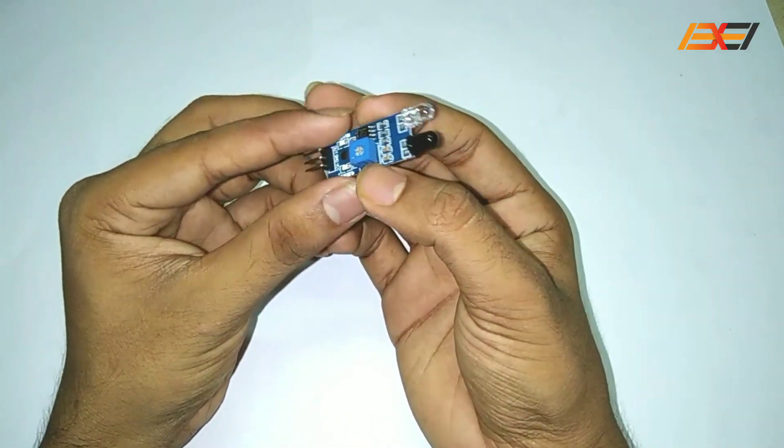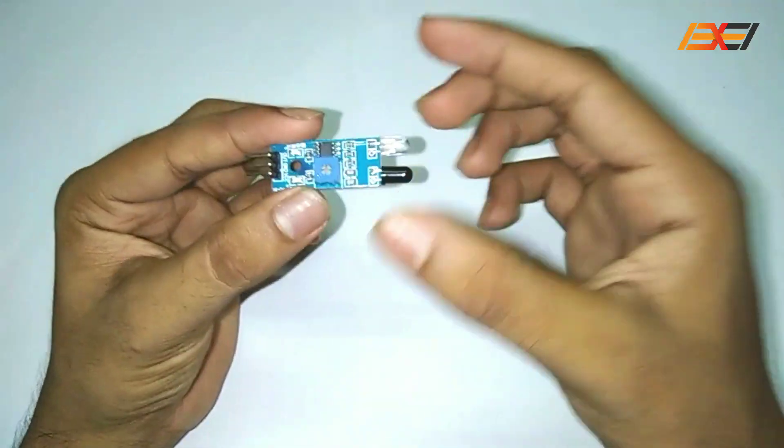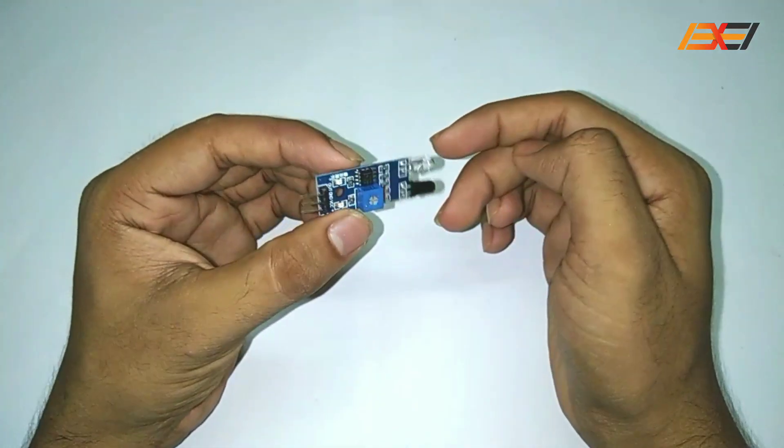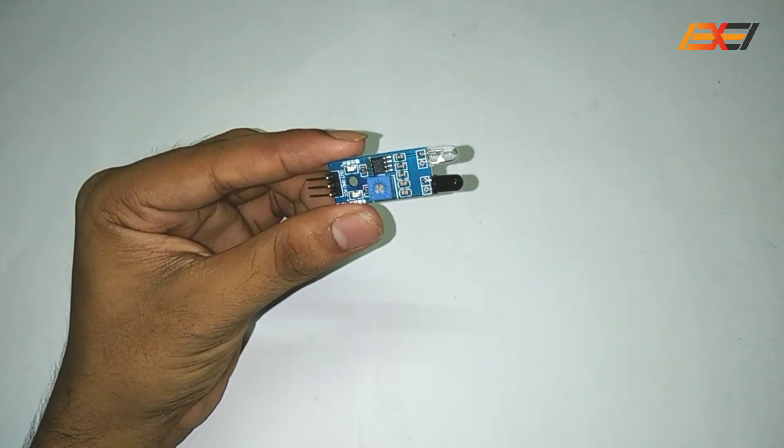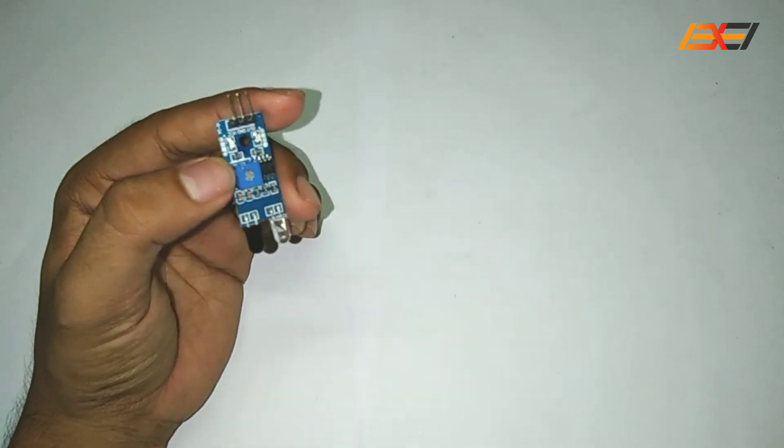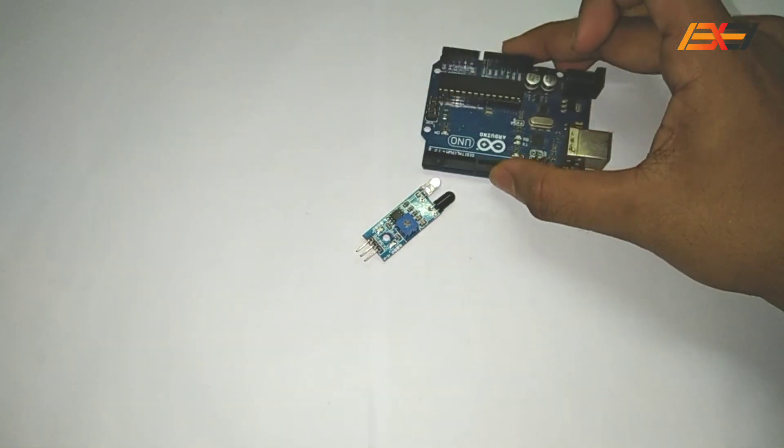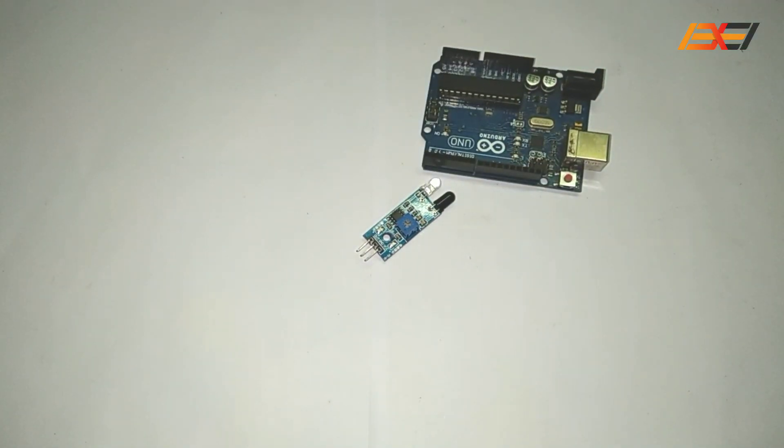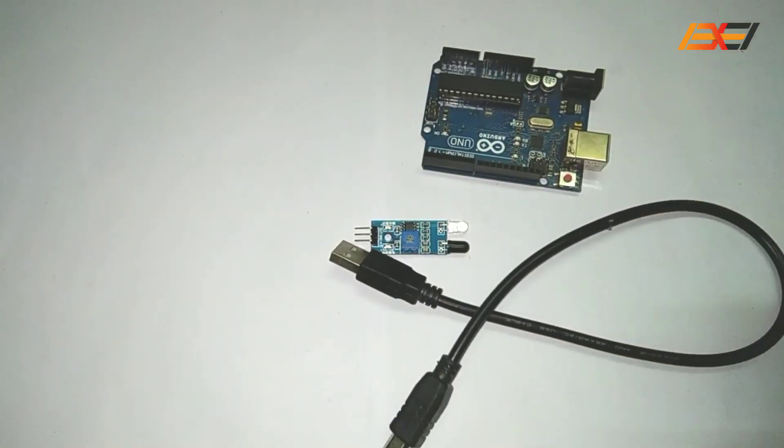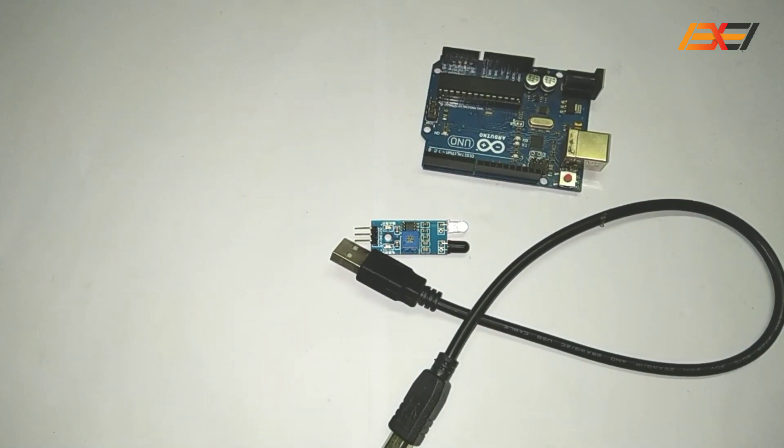Now I will show you how to interface this IR sensor with Arduino UNO board. For this we need Arduino UNO board, USB cable and three jumper wires.